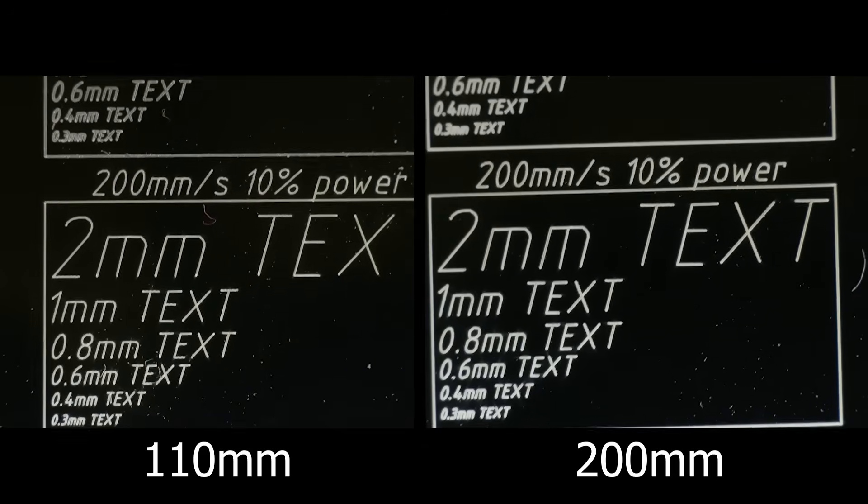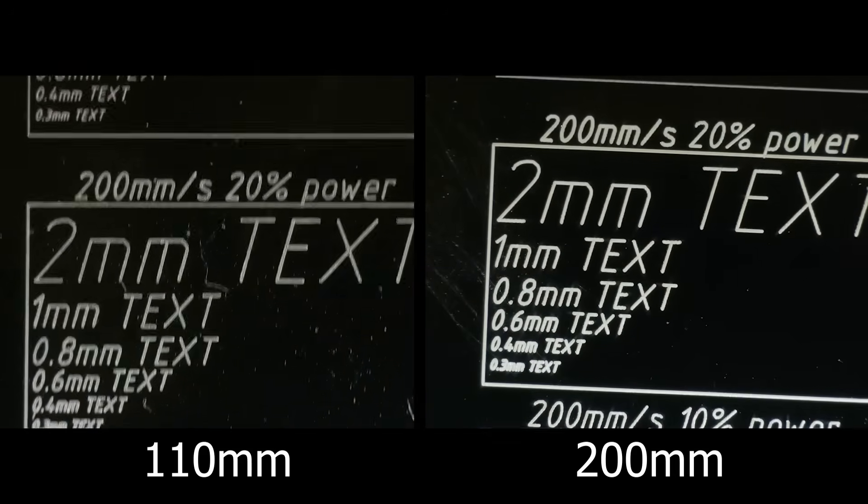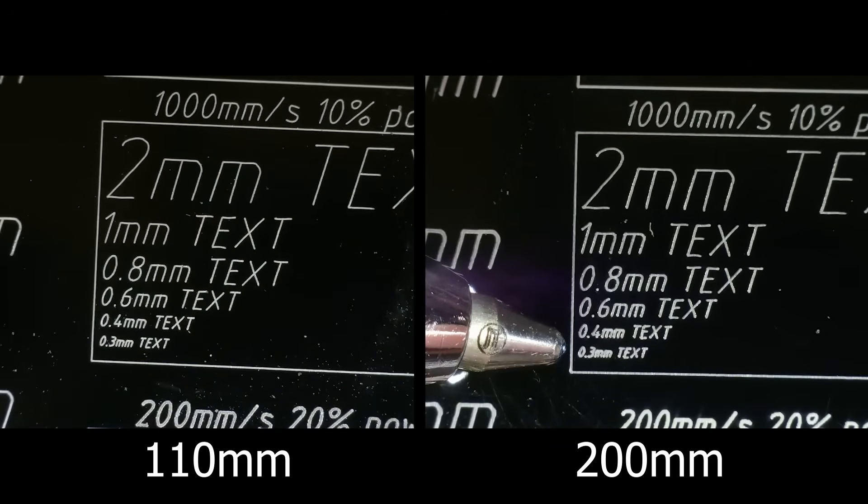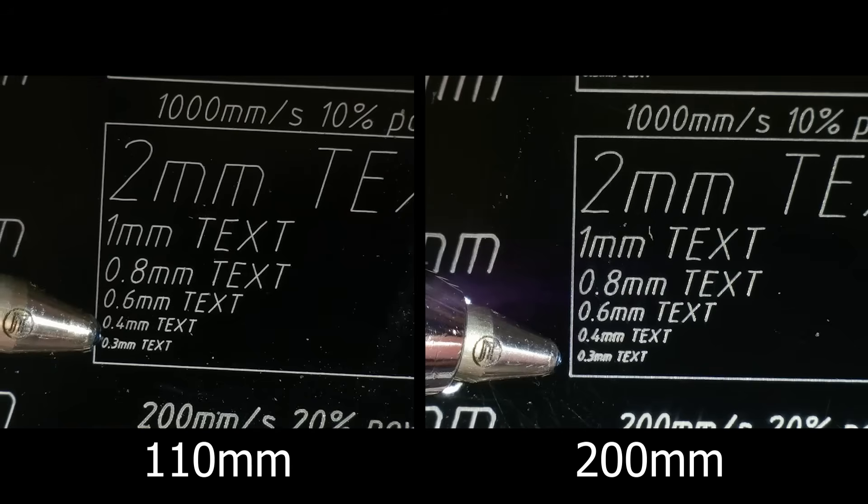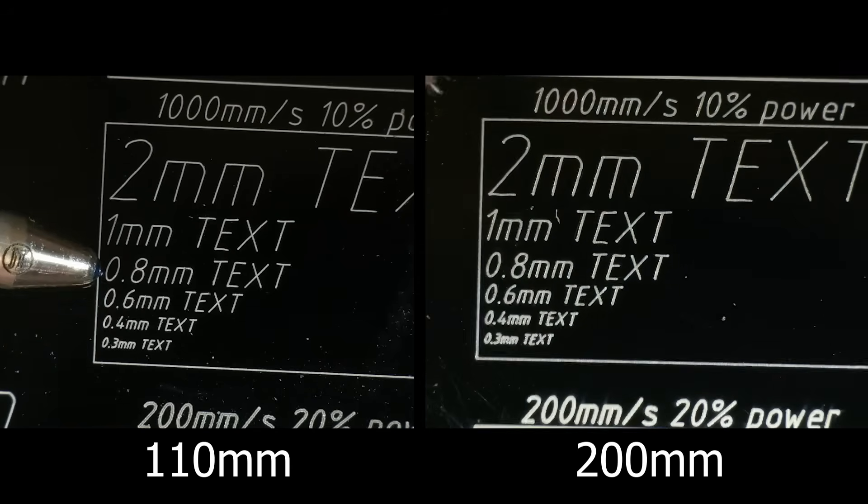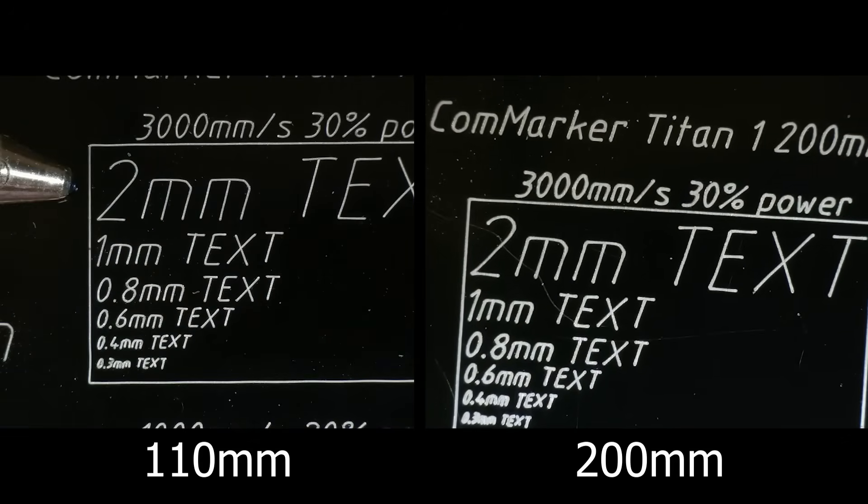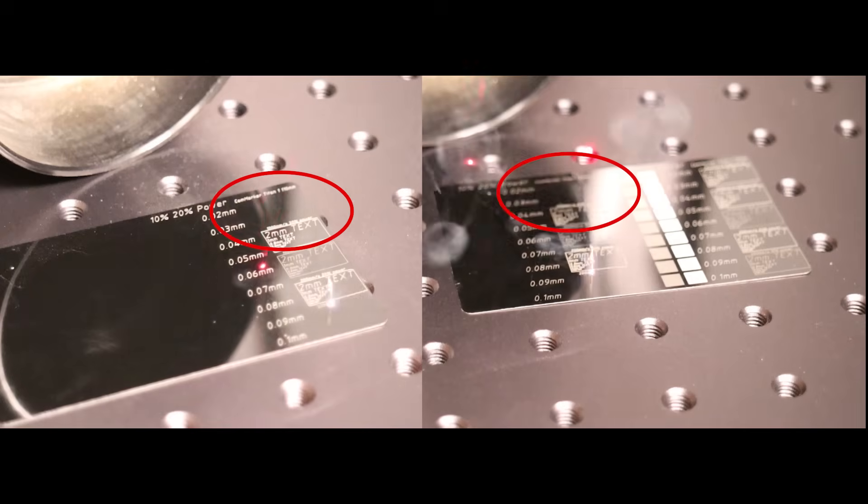Looking at the small text, the CommMarker Titan 1 delivered incredible detail, even at extremely high speeds. At 1000mm per second, the engraving remained sharp, and at 3000mm per second, the finer details were still impressive given the lightning-fast speed at which it was engraved.